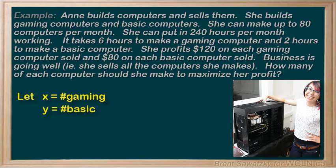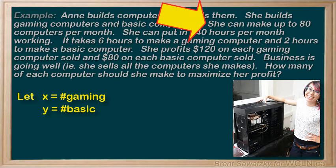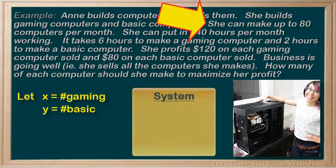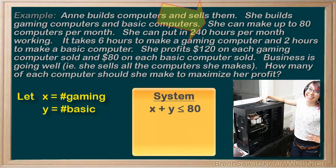Looking at the question, we see that she makes up to 80 computers per month. So the number of gaming computers plus the number of basic computers — x plus y — has to be less than 80. That's our first inequality.